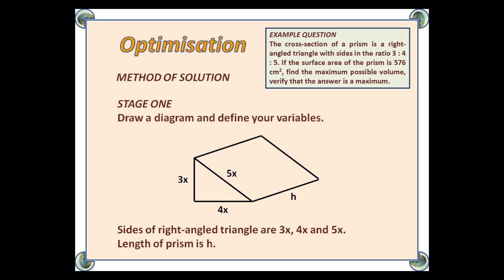Here is the method of solution. Stage 1: Draw a diagram and define your variables. So, here is our right-angled triangular prism, with the sides 3x and 4x and 5x in the ratio 3 to 4 to 5, and the length of the prism is h.